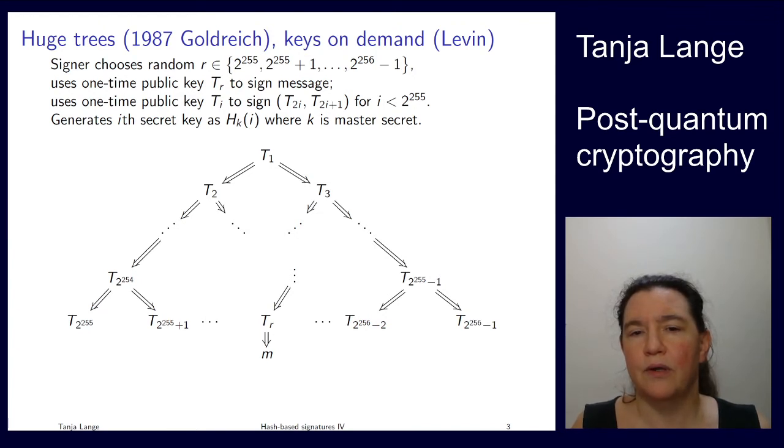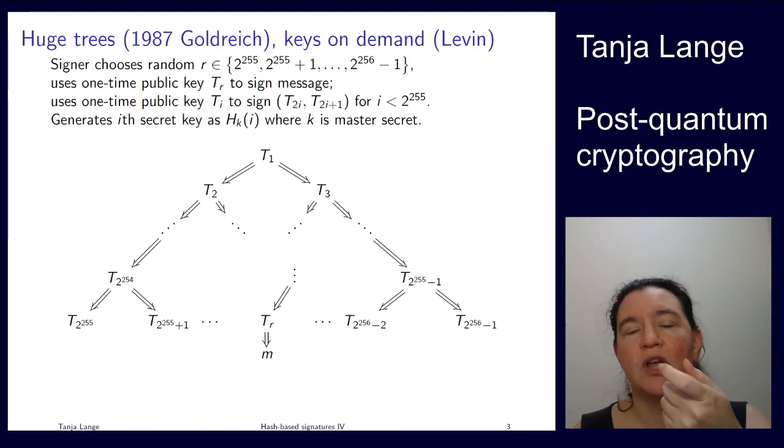Now you cannot pre-compute this. You cannot do the same ideas in Merkle. Nobody can compute T2 to the 256. So it's important that you have some function that tells you this is where you are in this position. So you want to have that the secret in a certain position is a function of some master secret. And so the key that belongs to the one-time signature Ti is generated as taking i as input to hash function where there is an index k. So the k here is your master secret key.